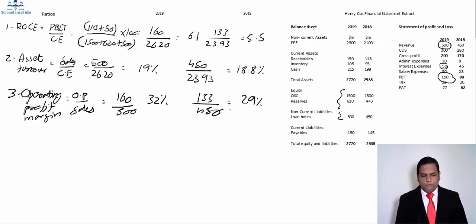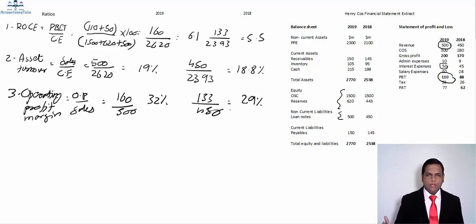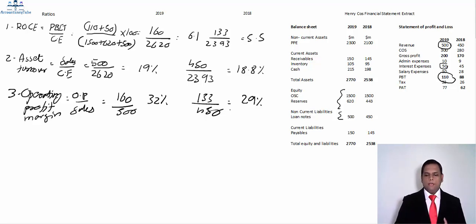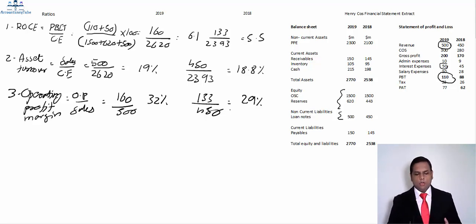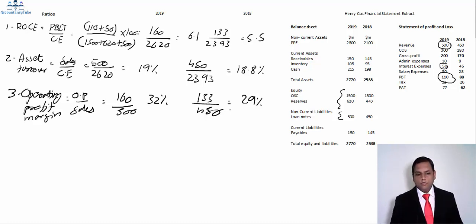Operating profit margin is simply comparing our return with sales, focusing the analysis on the costs in between — that is admin costs and salary expenses. If those costs, or the cost of sales, are reducing, this margin will increase. That's the logic behind it.